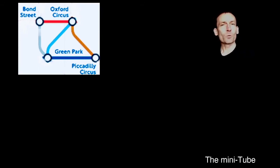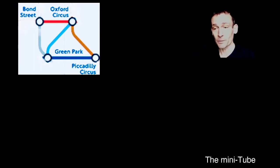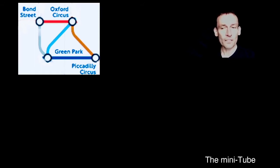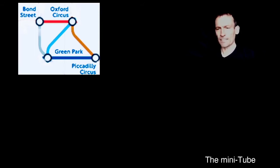Here's what I'm going to call the mini tube. This is actually just a mini segment of the tube network isolated around West One: Oxford Circus, Piccadilly Circus, Bond Street, and Green Park — four stations. And there's the Central line, the Bakerloo line, the Piccadilly line, the Victoria line, and the Jubilee line connecting them, just bits. Suppose that's it — you're in a mini London now.